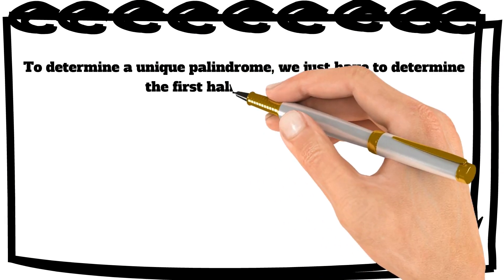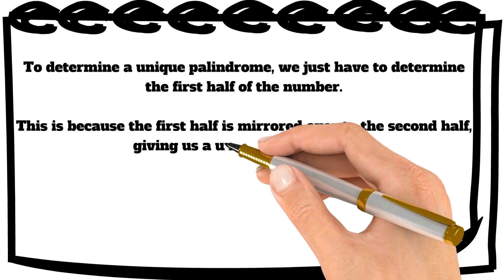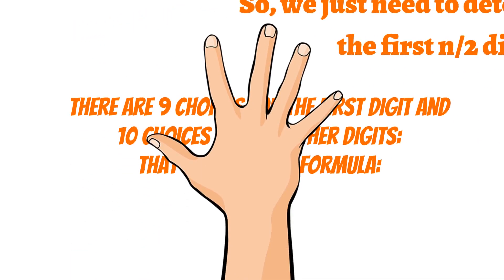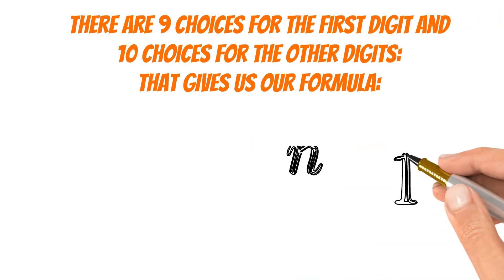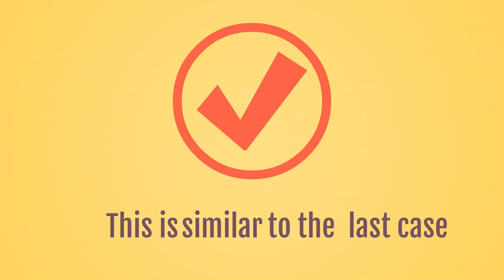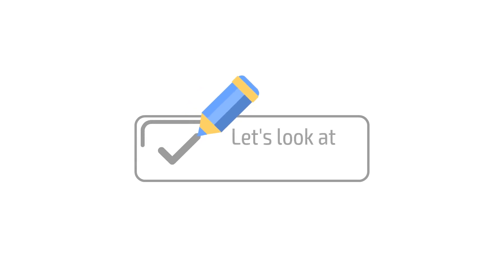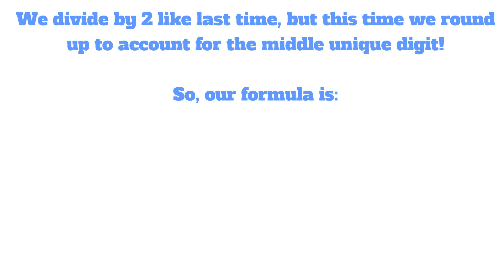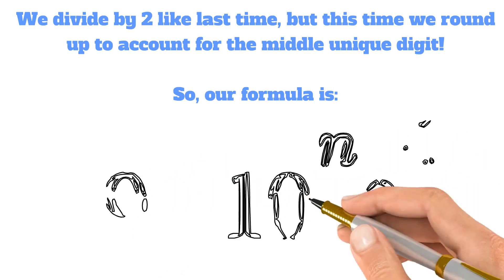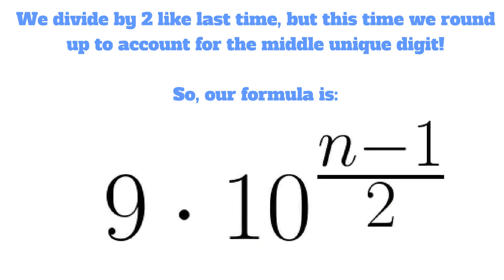To determine a unique palindrome, we just have to determine the first half of the number. This is because the first half is mirrored over to the second half, giving us a unique palindrome. That means we just have to determine the first n over 2 digits. There are nine choices for the first digit and ten choices for the other digits. That gives us our formula. For case two, the odd numbers, we divide by two like last time, but this time we round up to account for the middle unique digit.